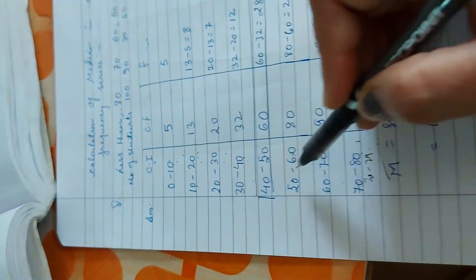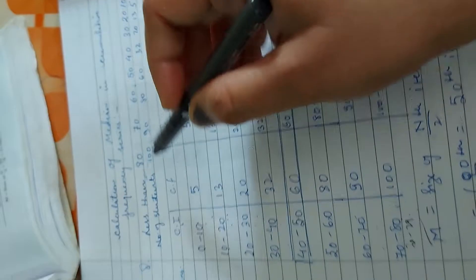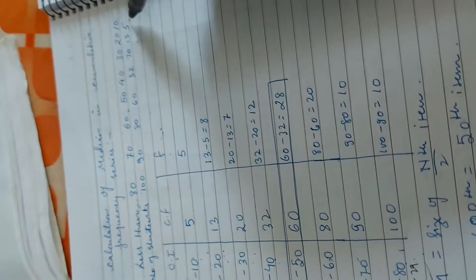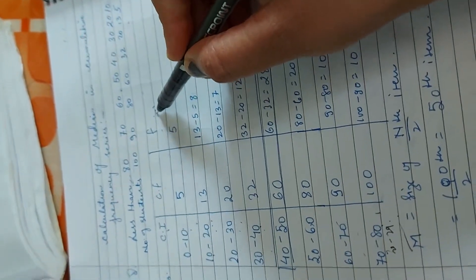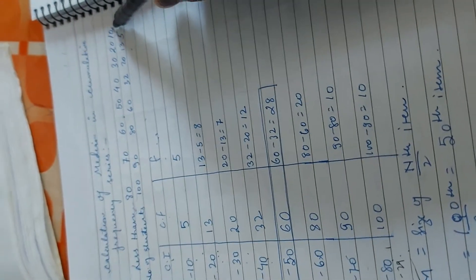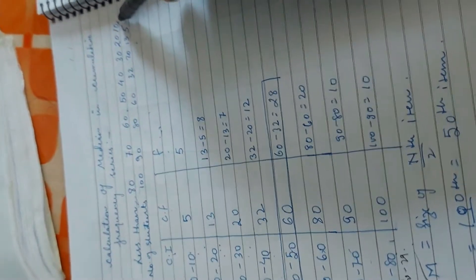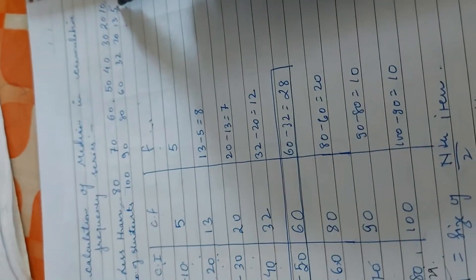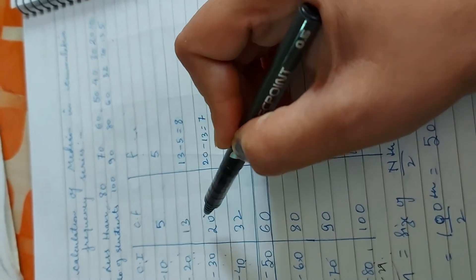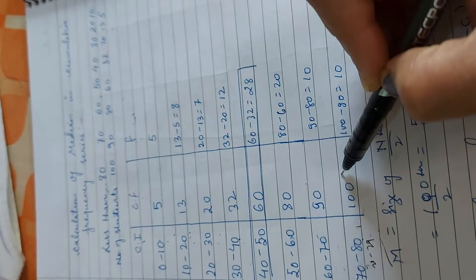Cumulative frequency is in this way because we have started from back to back. We have started from back to back to back. That is 5, 13, 20, 32, 60, 80, 90, and 100.